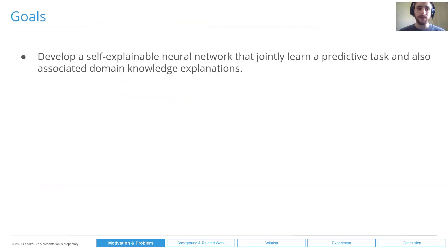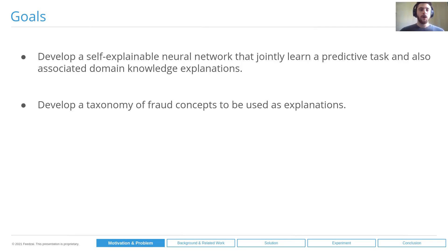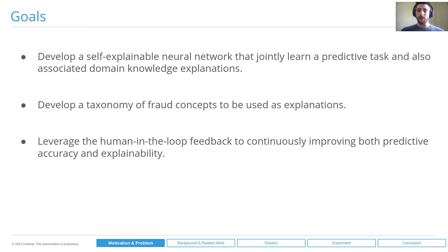The main goals of this work are to develop a self-explainable neural network that will jointly learn a predictive task — for instance, fraud detection — and also associated domain knowledge explanations, which in our use case can be different fraud patterns. We also want to develop a taxonomy of fraud concepts that will be used as the explanations, and then use those concepts from this taxonomy to enforce or provide different explanations. We also want to leverage human-in-the-loop feedback in order to continuously improve not only the predictive accuracy of the model, but also its explainability.